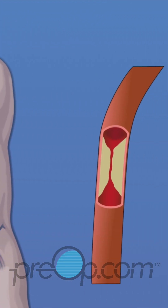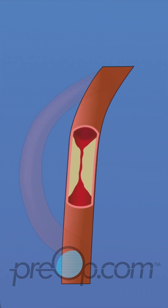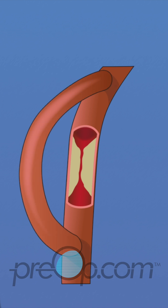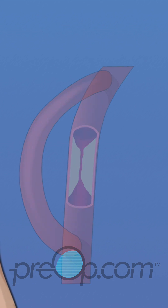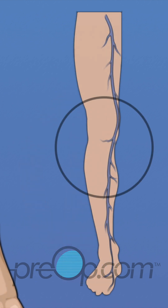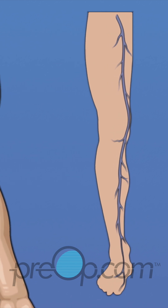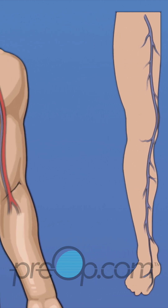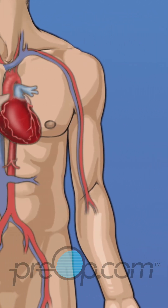During a CABG procedure, new pathways called bypasses are put in place to carry blood past and around blockages. Healthier blood vessels from other sites in the body are used to create each bypass. A section of leg vein or piece of an artery from an arm may be removed and used to create the bypass.